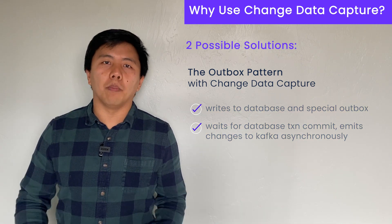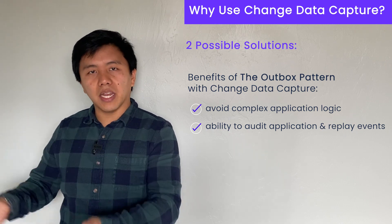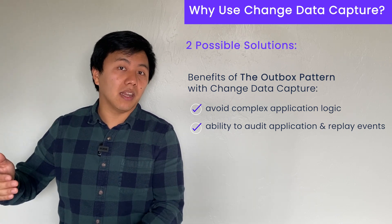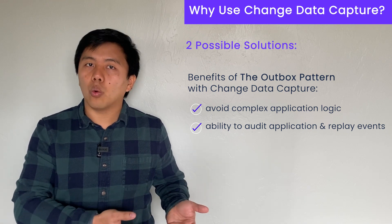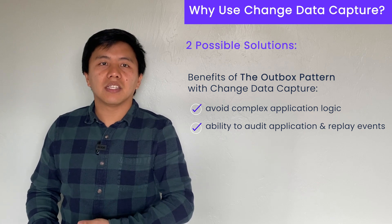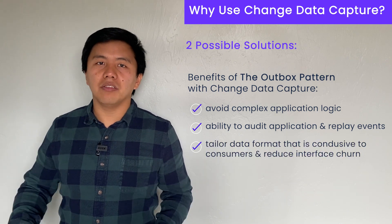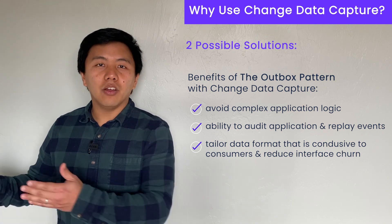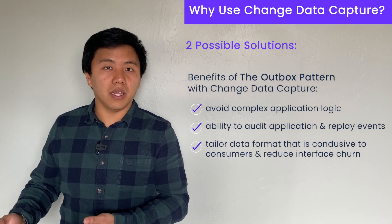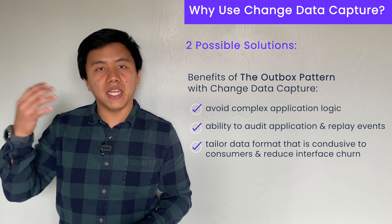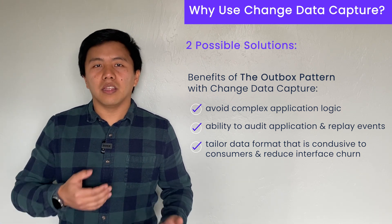There are a few benefits to using the outbox pattern. First, you avoid a lot of the complicated application logic we talked about before. Secondly, by using an outbox, you have a history of the events that should have been emitted. This allows you to audit what your application is doing, and also in cases where your Kafka server is down or you run into other issues, you can always replay those events so you don't lose any messages that should have been sent to your notification service. Lastly, you can tailor the data stored in your outbox table and sent downstream to the format most conducive to the consumer. This also means that if you change the schema of your events or attendees table, you don't necessarily have to change what is put into the outbox table, reducing system interface churn.